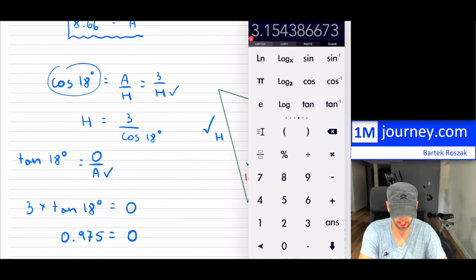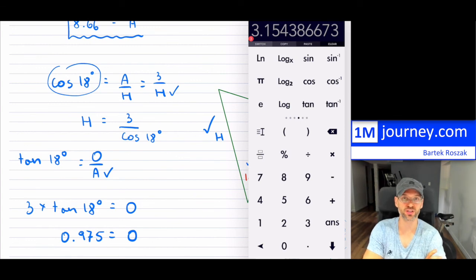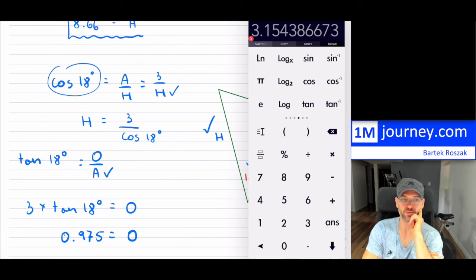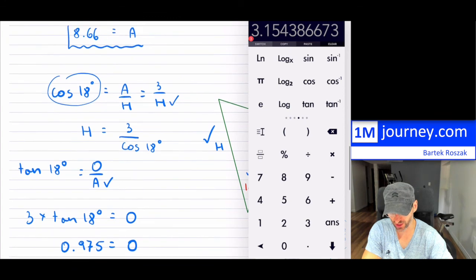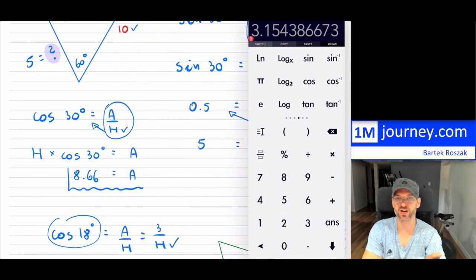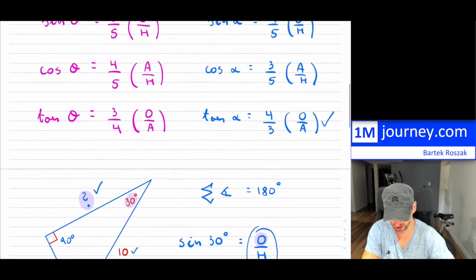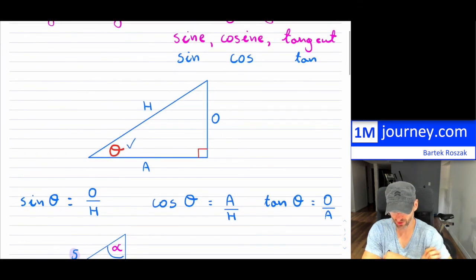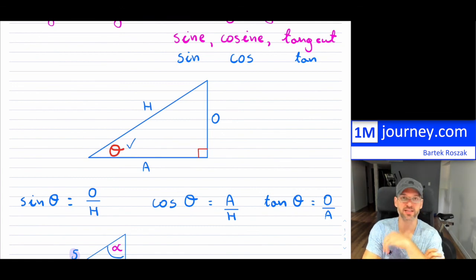Each calculator is a little bit different when inputting these — sometimes you put the degrees first, then hit sine, cosine, or tangent; or you hit the button first and then enter the value. You'll have to test out your calculators. These are just the introductions to the definitions of sine, cosine, and tangent as they relate to right-angle triangles. Sine is opposite over hypotenuse, cosine is adjacent over hypotenuse, and tangent is opposite over adjacent. Thanks for watching — see you in a future video.